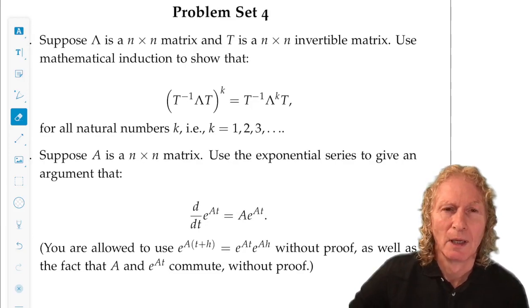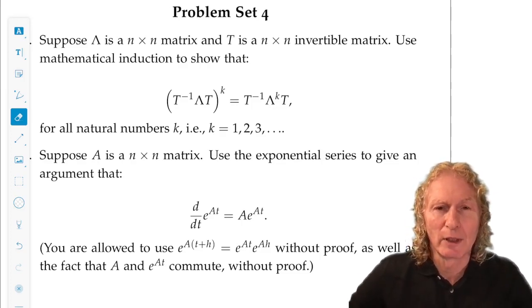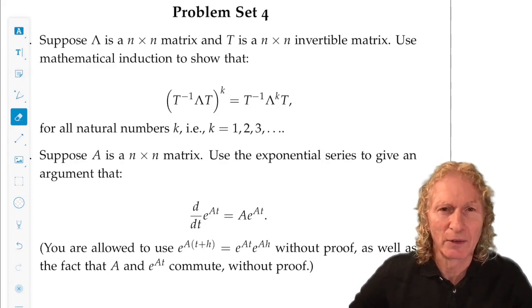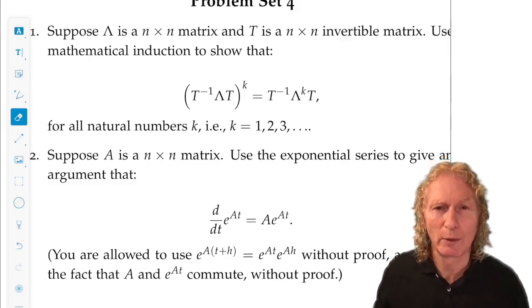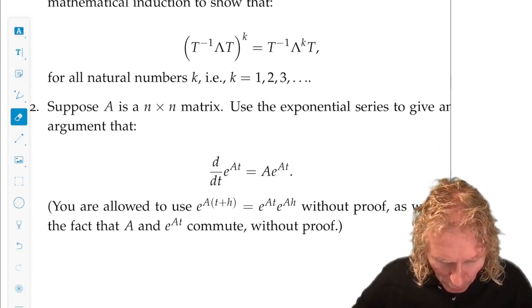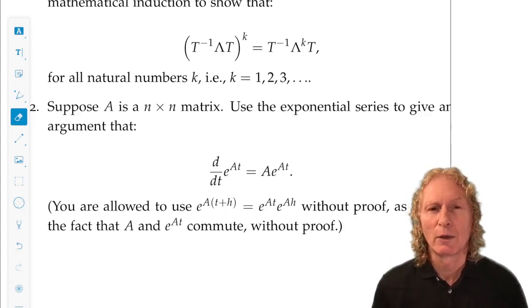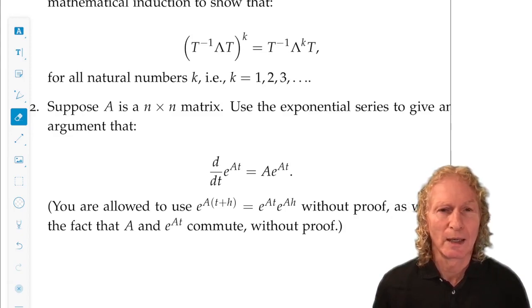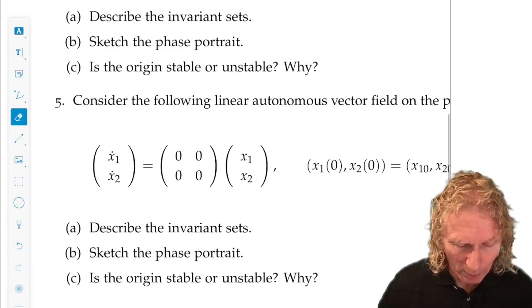So the first two problems are really to get you to focus on some of the details that I went through rather quickly in developing the solution of the linear equation. x dot equals ax, a is a constant, the solution is e to the at times the initial condition. The first problem is going to give you some good practice with mathematical induction, which you always need to brush up on from time to time. The second problem is to get you to go back and look at the derivative with respect to time of e to the at. And you might also want to look at Appendix B, where I have another proof of what the derivative of this is.